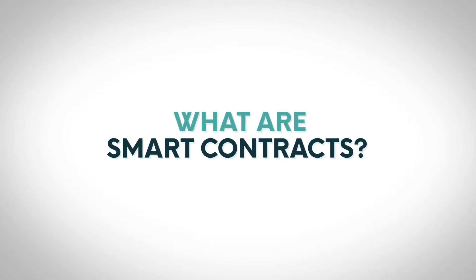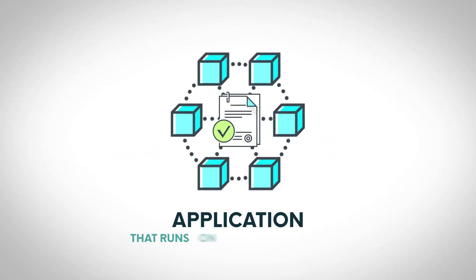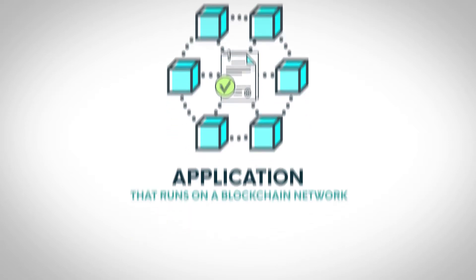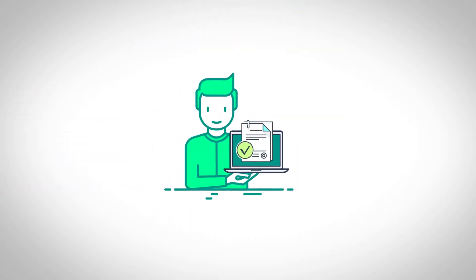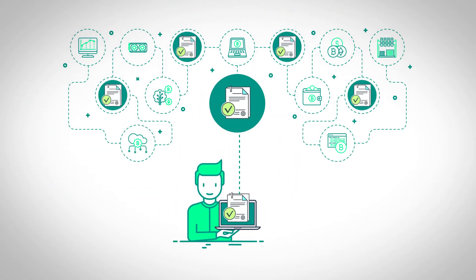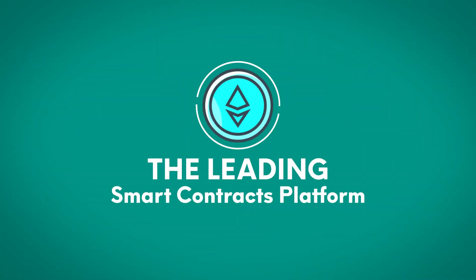What are smart contracts? A smart contract is an application that runs on a blockchain network. Developers write these contracts, then deploy them to a public blockchain network where people can interact with them. Today, the leading smart contracts platform is Ethereum, but there are many others.